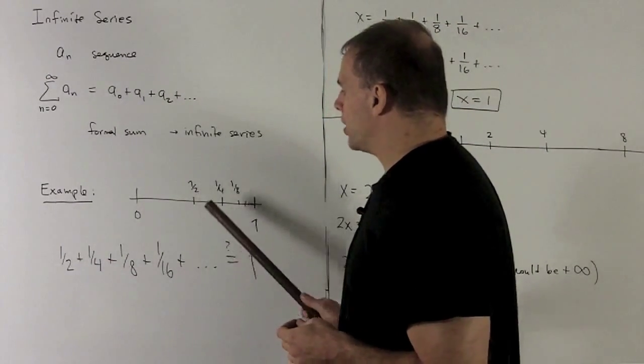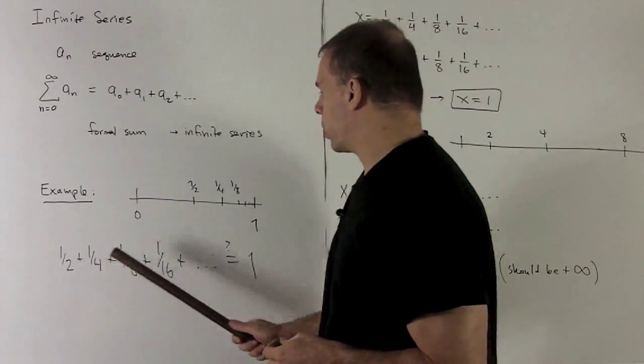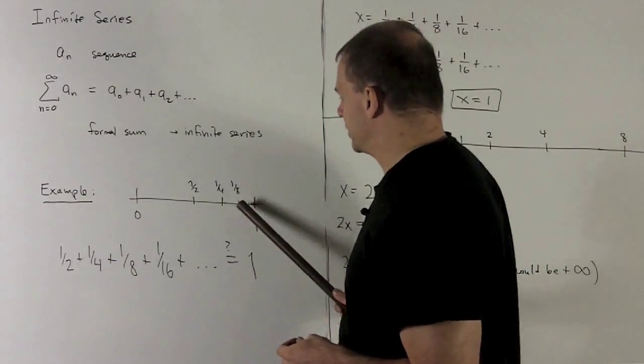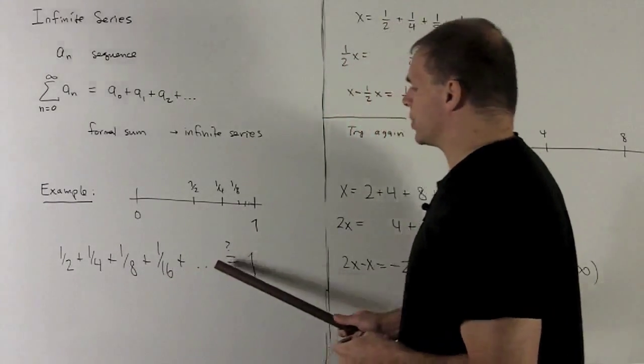So the series that would go with this is, chop once, that's going to give me a half. Chop again, that piece is going to give me a quarter. Chop again, that piece gives me 1 eighth. Chop again, 1 sixteenth, and so on, and so on, and so on.